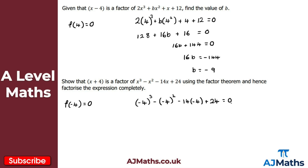Let's evaluate: minus 4 cubed is minus 64; minus 4 squared is 16, and then minus that gives minus 16; minus 14 times minus 4 is positive 56; and then plus 24. So minus 64 minus 16 gives minus 80, plus 56 plus 24 gives 0. So f of minus 4 equals 0, and therefore x plus 4 is a factor.